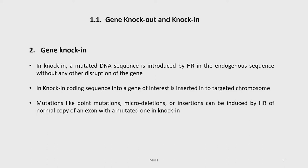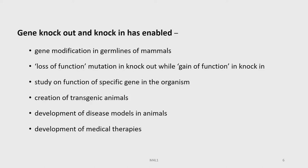On the other hand, in gene knockin, a mutated DNA sequence or a foreign DNA sequence is introduced by homologous recombination into the endogenous sequence without any other disruption of the gene. In knockin, a coding sequence into a gene of interest is inserted into the targeted chromosome. Mutations like point mutations, micro-deletions or insertions can be introduced by homologous recombination of a normal copy of an exon with a mutated one in the knockin procedure.